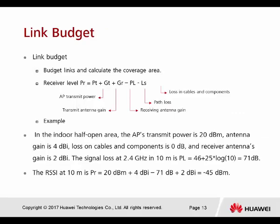The next is link budget — calculate the coverage area using a formula. PT is the AP transmit power, GT is the transmit antenna gain, GR is the receive antenna gain, minus the path loss, minus the loss in cable and components. For example, if the EIRP coming out of the antenna is 20 dBm and the AP has an external antenna with a gain of 3 dBi, we transmit to a PC 10 meters away.